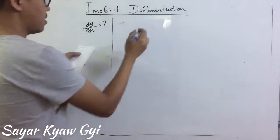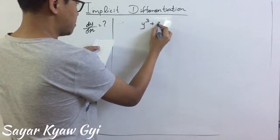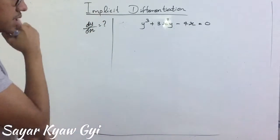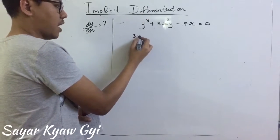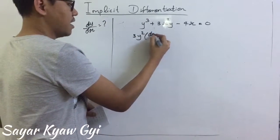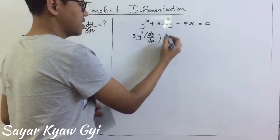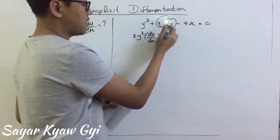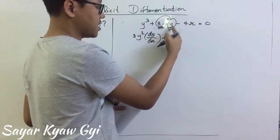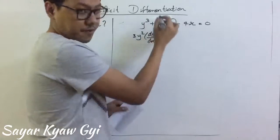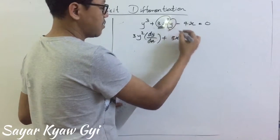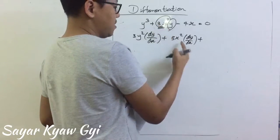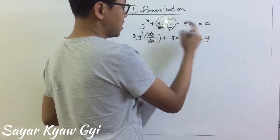The next example is y cubed plus 3x squared y minus 4x equal to 0. So, y cubed gives 3y squared dy by dx. Plus — this one is going to use the product rule. The first term I copy and differentiate the second: 3x squared times dy by dx. Then plus, the second I copy — y — and differentiate the first — 6x. First one you copy, second one you differentiate; plus second one you copy, first one you differentiate — that's the product rule.